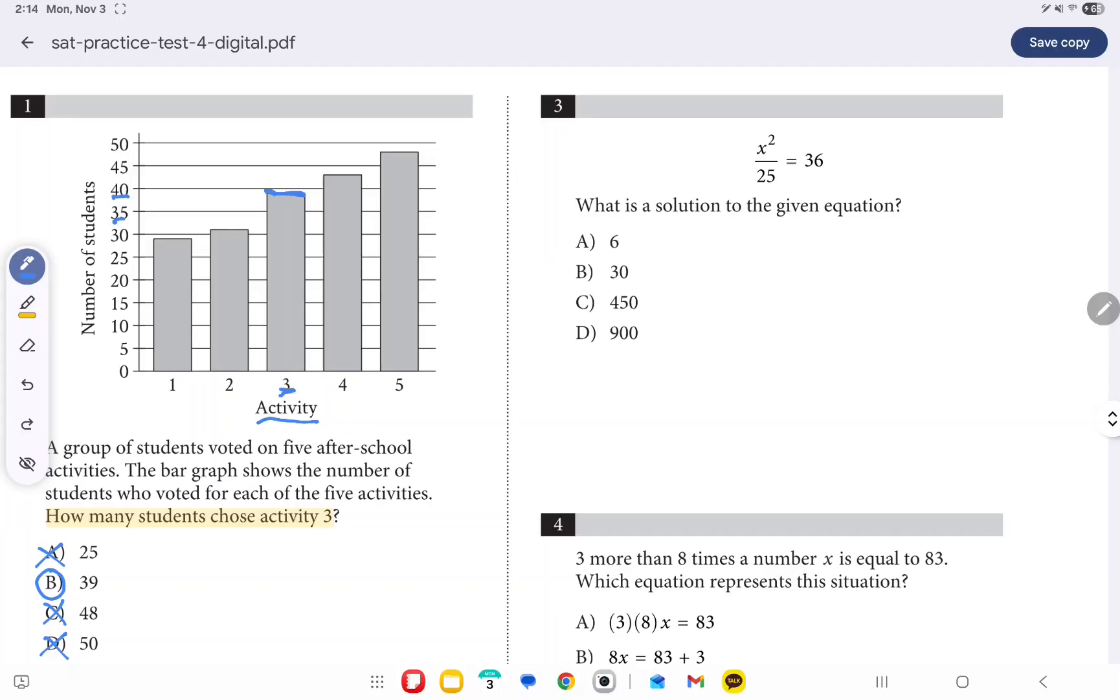Question 3 asks, what is the solution to the given equation? And here we have X squared, divided by 25, is equal to 36. Again, just like in the previous example, when we have an equation and we're trying to solve for X, we want to get X all by itself.